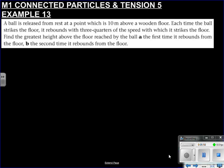Next one. A ball is released from rest. So I thought this would be good, because this is a SUVAT problem. We haven't done a SUVAT problem in a while. So a ball is released from rest at a point which is 10 meters above the ground. So remember, released from rest means its initial velocity is 0. Each time the ball strikes the floor it rebounds with three quarters of the speed with which it strikes the floor. Find the greatest height above the floor reached by the ball A the first time it rebounds from the floor and B the second time.